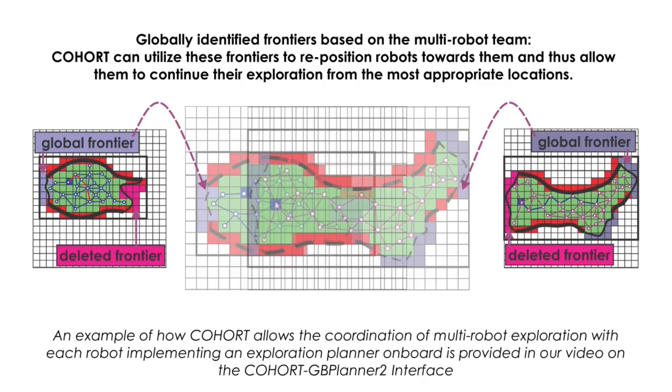Upon arrival to such a global frontier, a robot can then exploit its onboard exploration planner and later query COHORT again to ensure its actions are aligned with those of the other robot team members. We present how COHORT can be combined with GB Planner 2 in a separate explanatory video. Thanks, everyone.